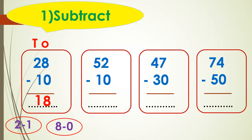The next question: 52 minus 10. Let's take away 10 from 52. First write tens and ones, and we will start subtracting by ones.